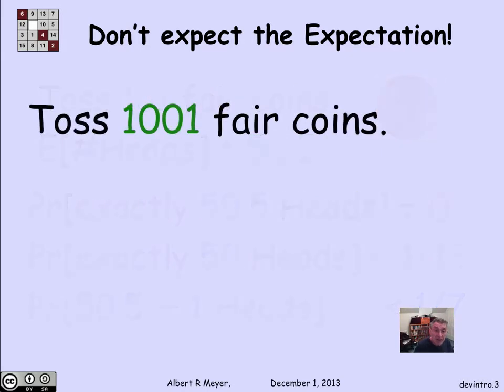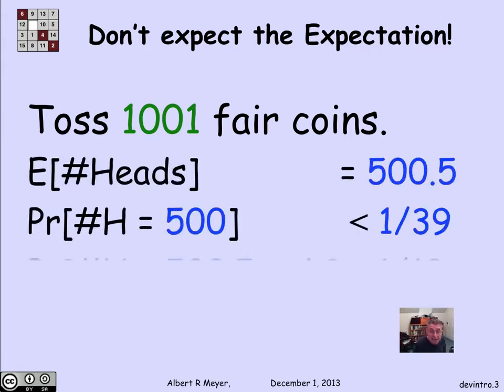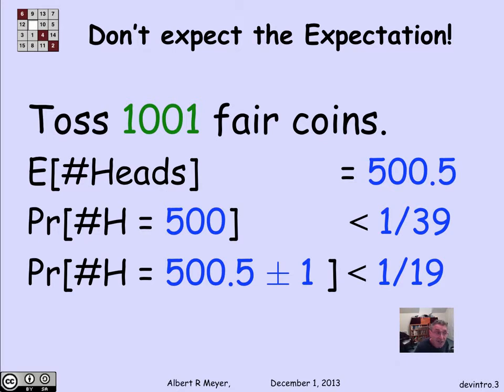Let's flip more coins and see what happens. This time, I'm going to flip 1,001 coins. And again, the expected number of heads is 500 and a half, which I'll never get exactly. The probability of getting exactly 500 heads is 1/39th. And the probability of getting within 1 of the expectation, that is either 500 or 501 heads, is about 1/19th.